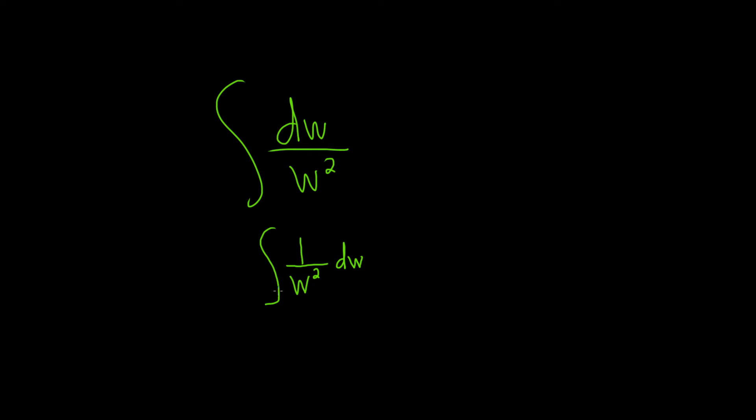And so our goal is to write this as w to a power. So what we can do next is we can take this w squared and bring it upstairs. And when we do that, it becomes negative.